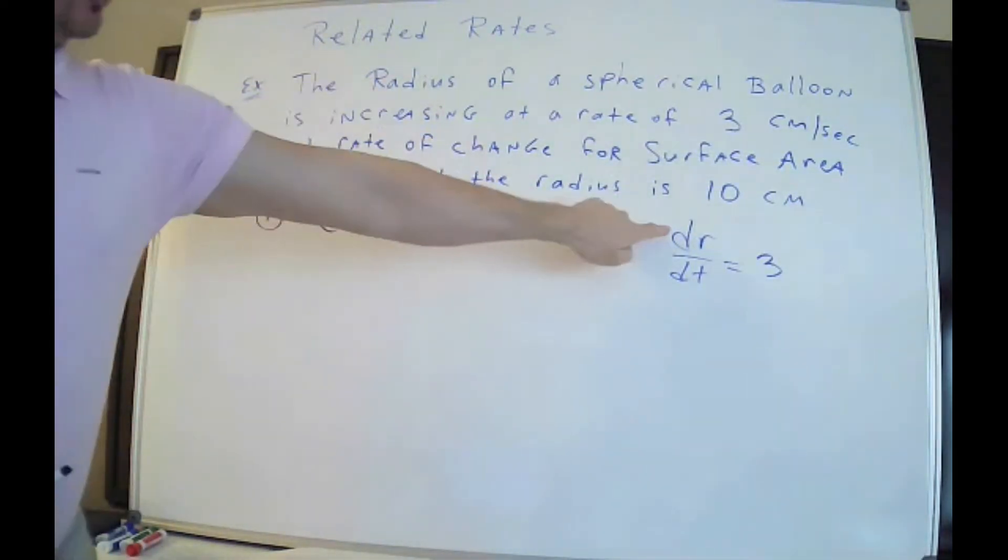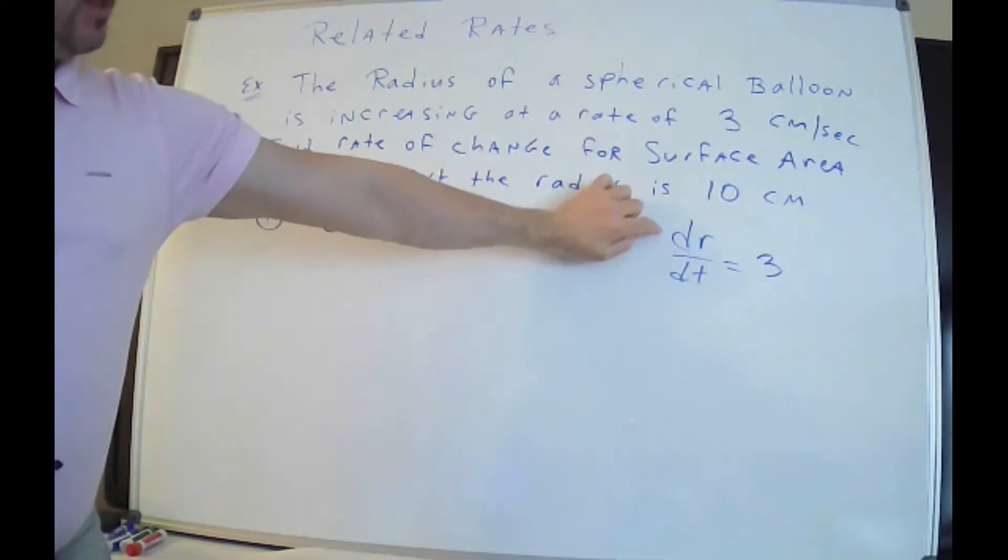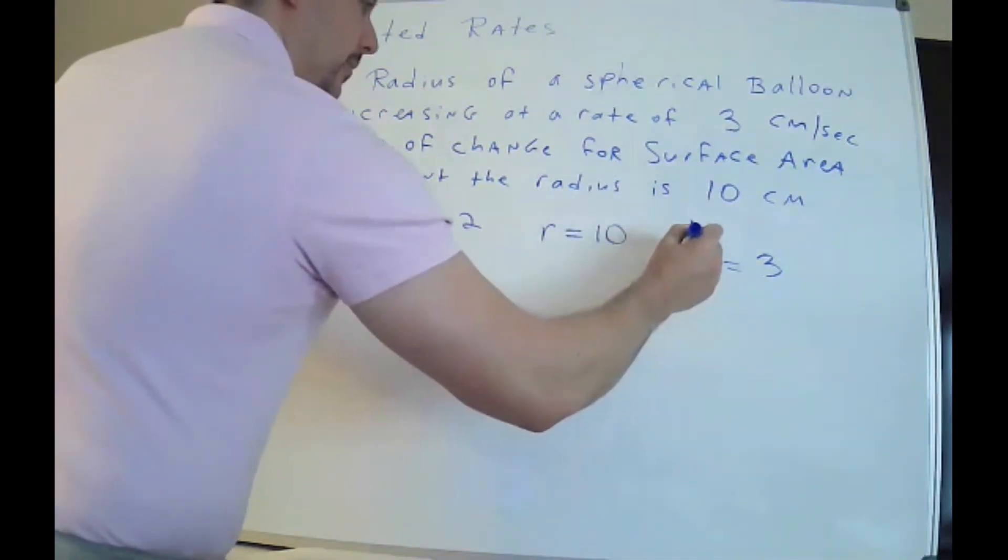Now I got to read everything else carefully. The radius is increasing at a rate of. As soon as you see at a rate of that's dr/dt and they're saying radius. So they just told me that dr/dt is 3, ignore the centimeters per second. You don't have to put that.